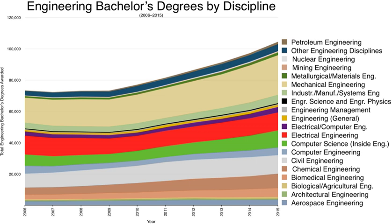Engineering training in Tanzania is typically provided by various universities and technical institutions in the country. Graduate engineers are registered by the Engineers Registration Board after undergoing three years of practical training. A candidate qualifies as a professional engineer (P.Eng.) if he or she holds a minimum four-year post-secondary engineering education and a minimum of three years of post-graduate work experience. The Engineers Registration Board is a statutory body established through an Act of the Tanzanian Parliament in 1968.